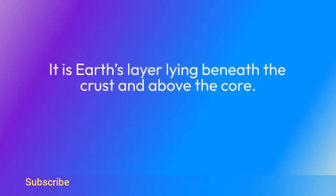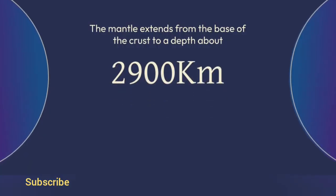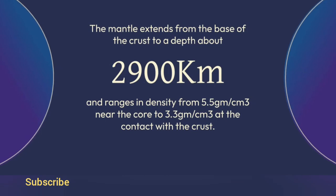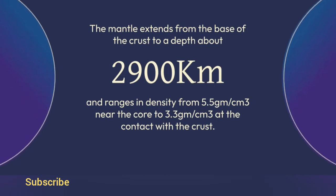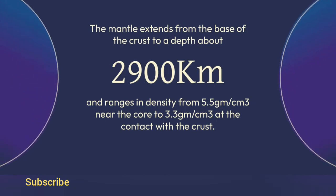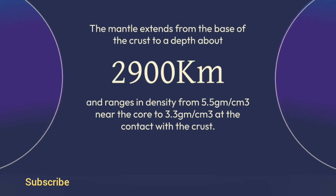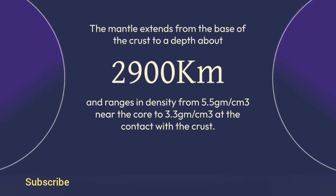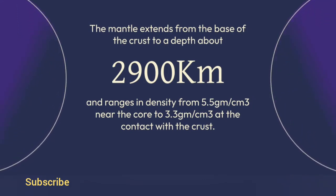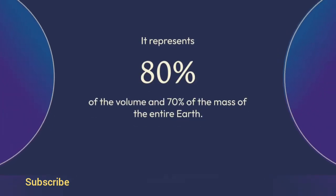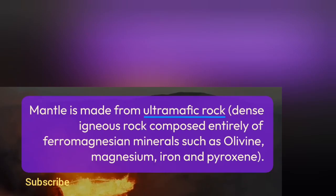2. Mantle. The mantle is Earth's layer lying beneath the crust and above the core. It extends from the base of the crust to a depth of about 2,900 km and ranges in density from 5.5 g/cm³ near the core to 3.3 g/cm³ at the contact with the crust. It represents 80% of the volume and 70% of the mass of the entire Earth. The mantle is made from ultramafic rock, a dense igneous rock.